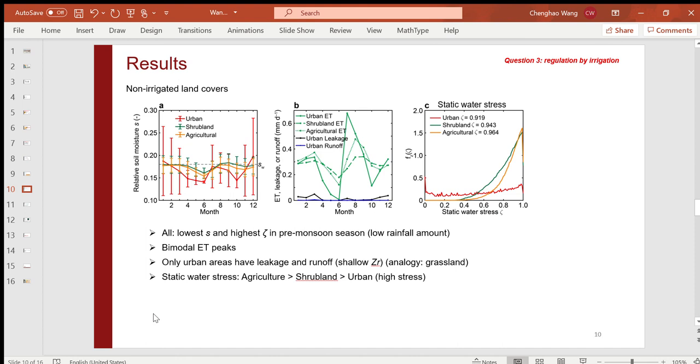In general, during pre-monsoon season, like in June, Phoenix Metro received very low rainfall. This leads to the lowest soil moisture and highest plant water stress. The second plot shows the simulated ET, leakage, and runoff of vegetation over three land cover types. The bimodal ET peaks are quite clear. This is also quite consistent with the observed vegetation indices.